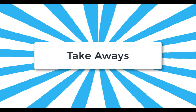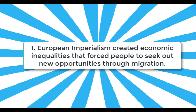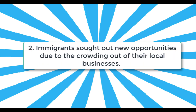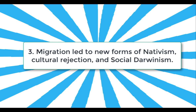Here are three big takeaways. Number one: European imperialism created imbalances in power and economics that encouraged, if not forced, people to look for new economic opportunities. Number two: migrants sought out new jobs on plantations and in factories around the world due to the crowding out of local business opportunities. Number three: this movement of migrants around the world oftentimes led to new types of nativism, racism, and social Darwinist arguments in which migrants were pitted against other groups of people seeking out resources and jobs.